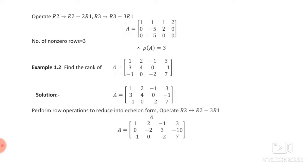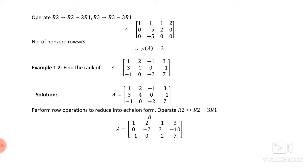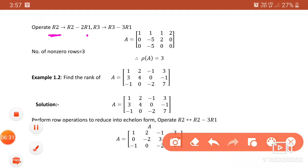Next, we want to convert the leading elements 2 and 3 into 0. To do this, operate R2 → R2 − 2R1 and R3 → R3 − 3R1. We can perform two or three transformations at a time depending on the problem, but the row being subtracted must be common. This converts the first elements of R2 and R3 to 0.